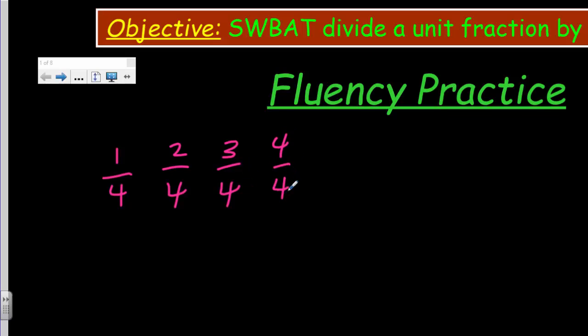It's pretty simple, right? One-fourth if we're counting by fourths here, two-fourths, three-fourths, four-fourths, five-fourths, six-fourths, seven-fourths. You get the general idea here. We're just counting by fourths. Seems pretty easy, right?